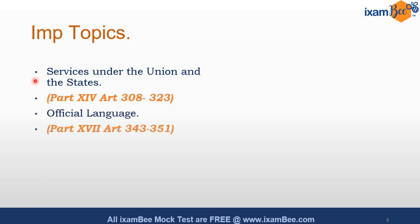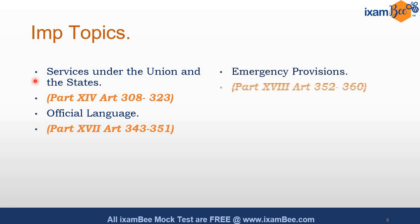Then the official language — kabhi kabhi direct questions aa jaate hain. Official language in Union kya hai — Hindi hai, Devanagari script mein. Courts ki language kya hai — all these points you have to be clear with. Then emergency provisions: three kinds of emergencies with article numbers aapko pata hona chahiye. Article 352 covers proclamation of emergency, 356 covers state emergency (presidential rule), 360 covers financial emergency. Current affairs se bhi relate karke aap yeh topic prepare kar sakte hain.